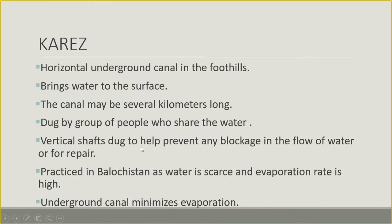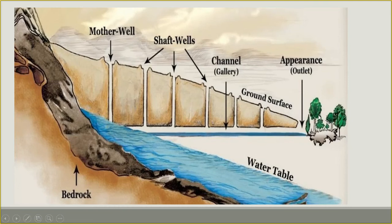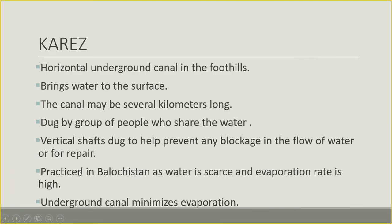Vertical shafts are also dug to help prevent any blockage in water flow or for repair purposes. Since this is an underground canal, if there is any obstruction or damage, it can be repaired through these vertical shafts. This system is practiced in Balochistan where water is very scarce and the evaporation rate is very high. An underground canal minimizes evaporation.